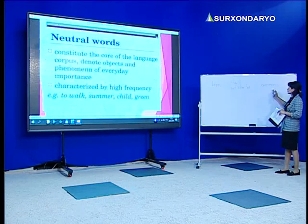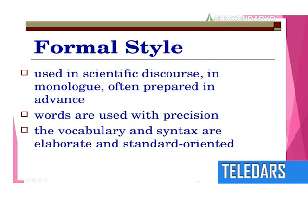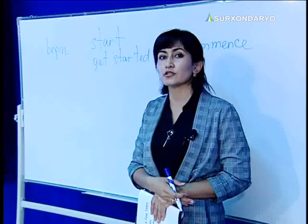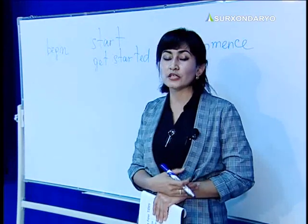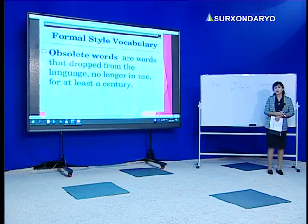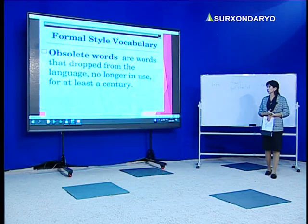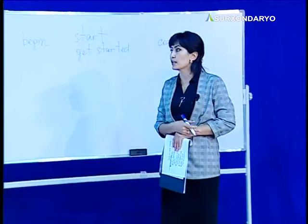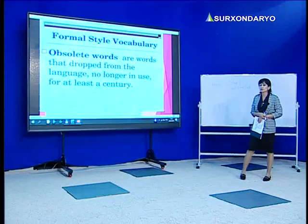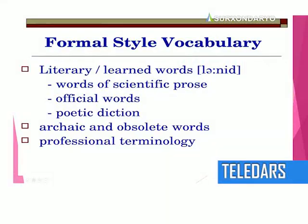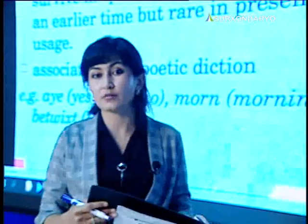When we talk about vocabulary, 'commence' we may use only in formal style as a literary one. When we talk about the formal style, we should talk about archaic words, historical words, or absolute words. Archaic words are the words which we don't use in our speech. Absolute words are also historical words — words that dropped from the language, no longer in use for at least a century. And about historical words, we can use ancient words, for example musical names and other ancient words.